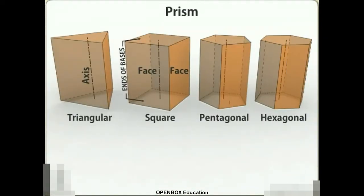Prism. This is a polyhedron having two equal and similar faces called its ends or bases, parallel to each other and joined by other faces which are parallelograms. The imaginary line joining the centers of the bases is called the axis. A right regular prism has its axis perpendicular to the bases. All its faces are equal rectangles.